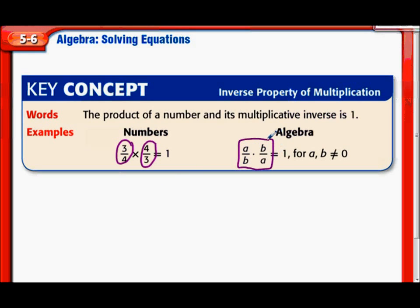Here you can see in algebra how it lays it out nicely. If you have A over B, so whatever your numerator is and whatever your denominator is, if you flip them over, now it would be B over A. That always equals 1.